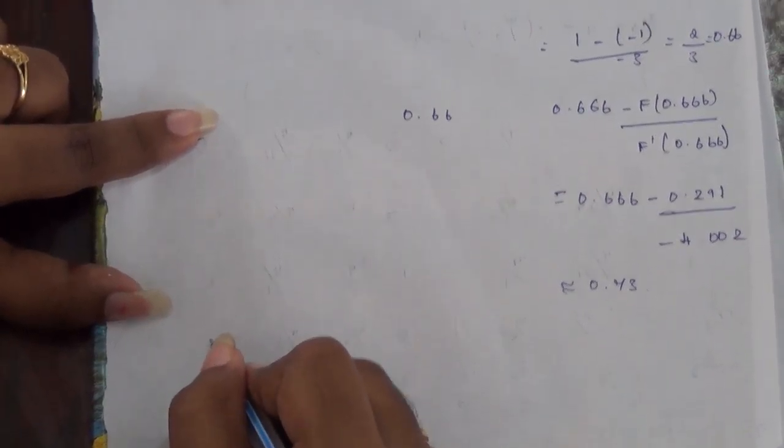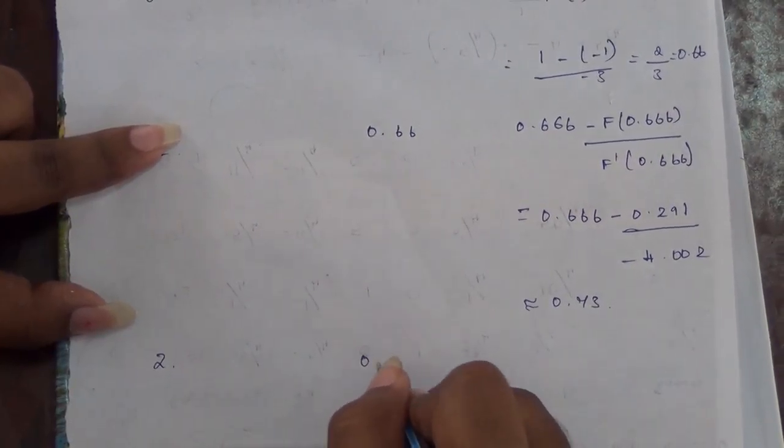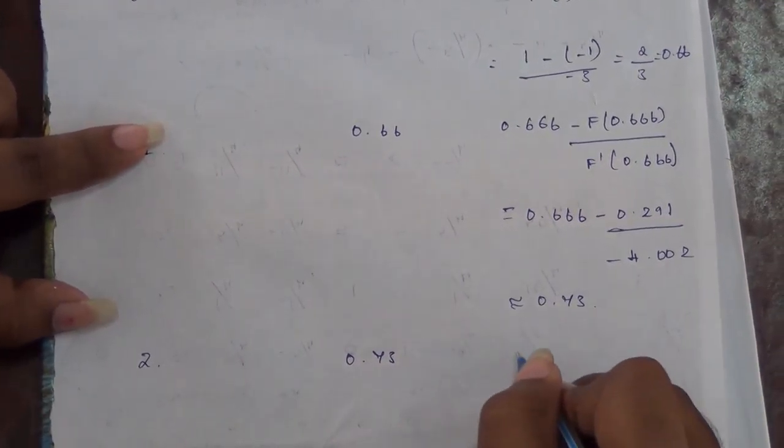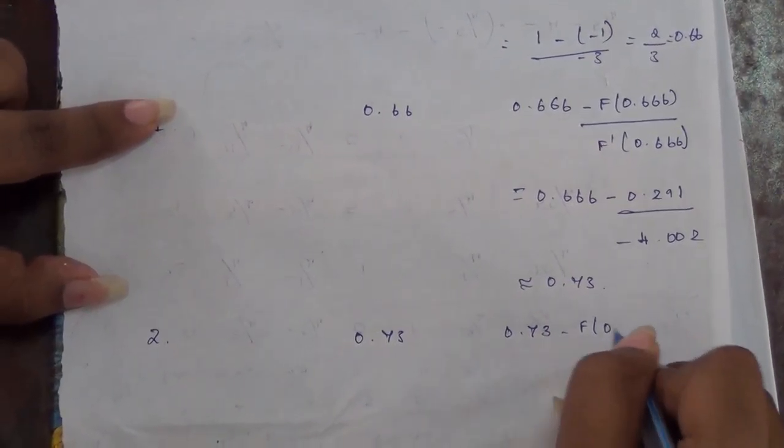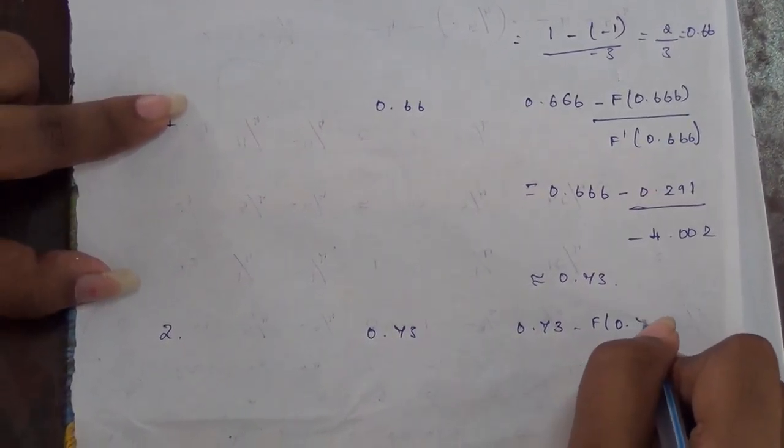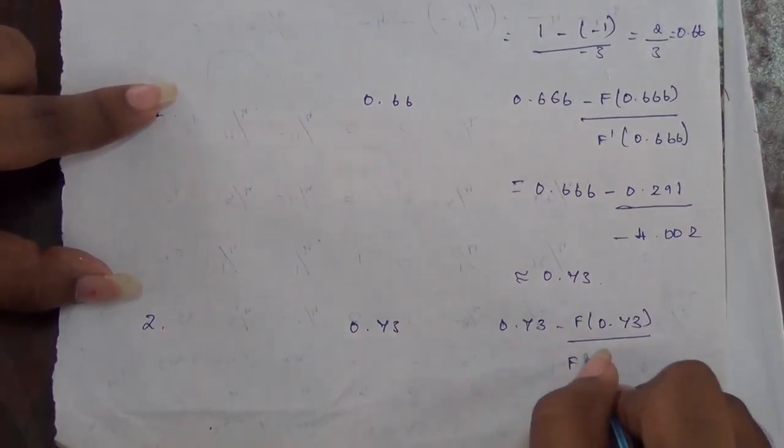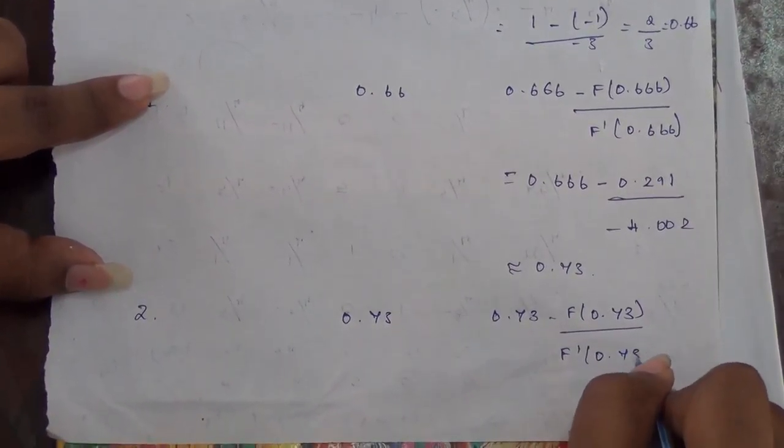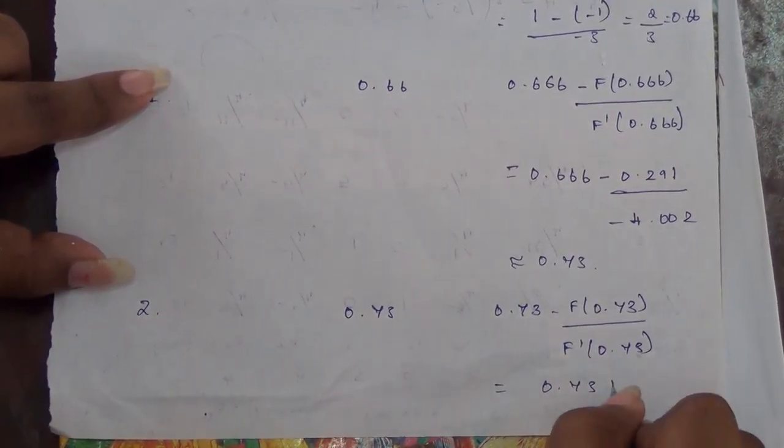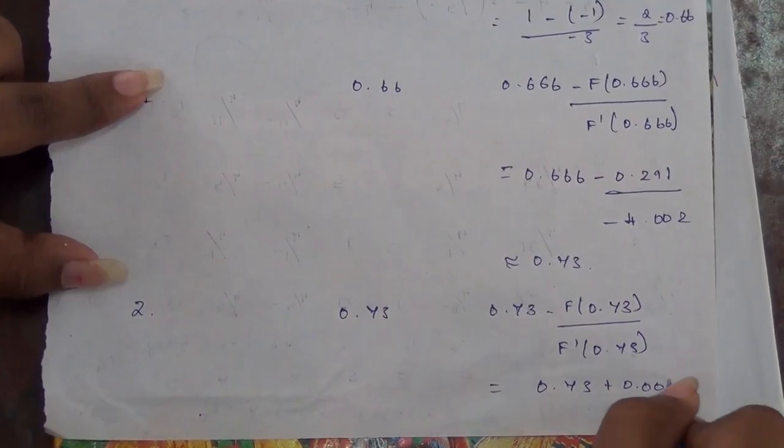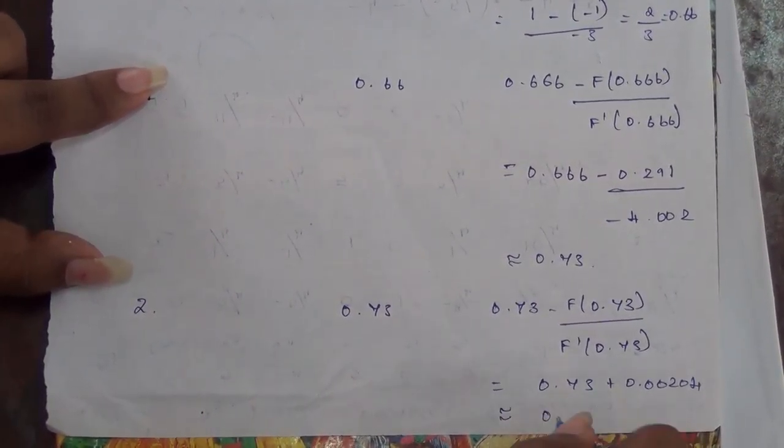And in the next iteration when iteration is 2, we substitute x_n = 0.73. And again we have to substitute this in the same equation where we calculate f(0.73) and f'(0.73). So we get the values as 0.73 + 0.00204, which is again approximately equal to 0.73.